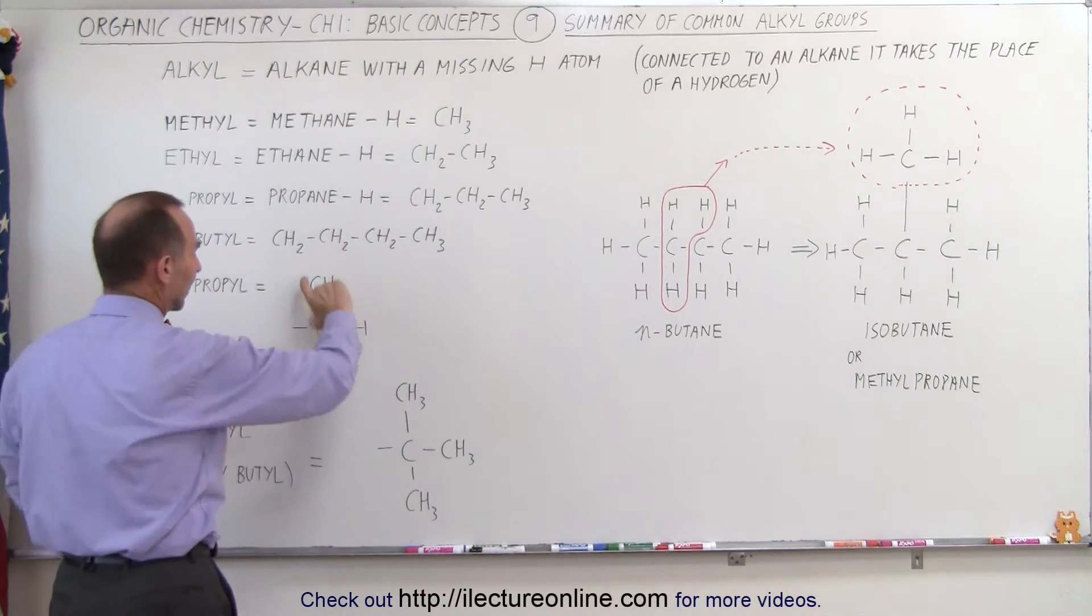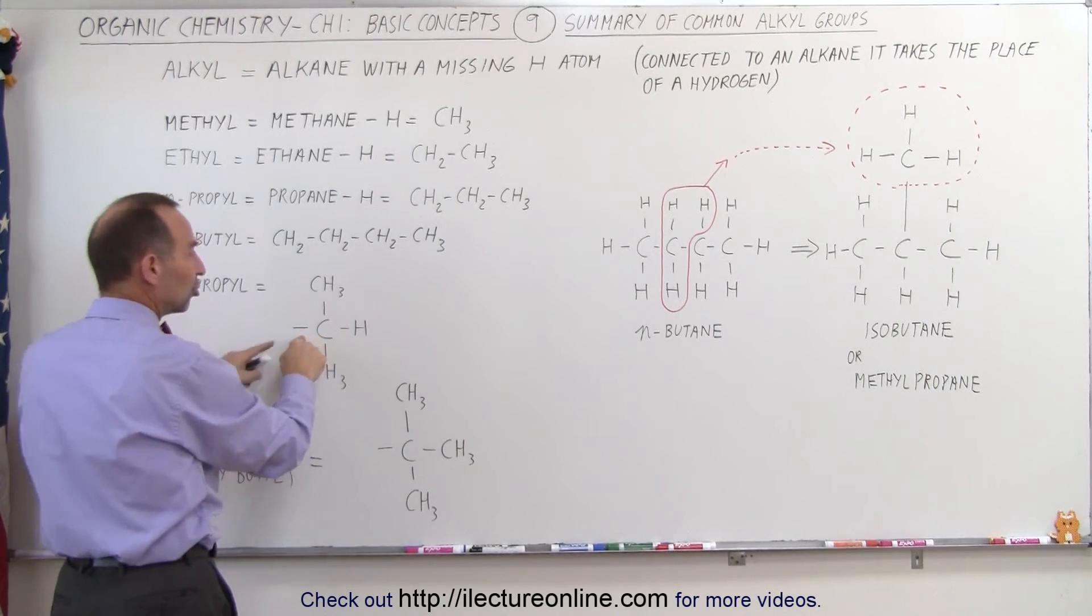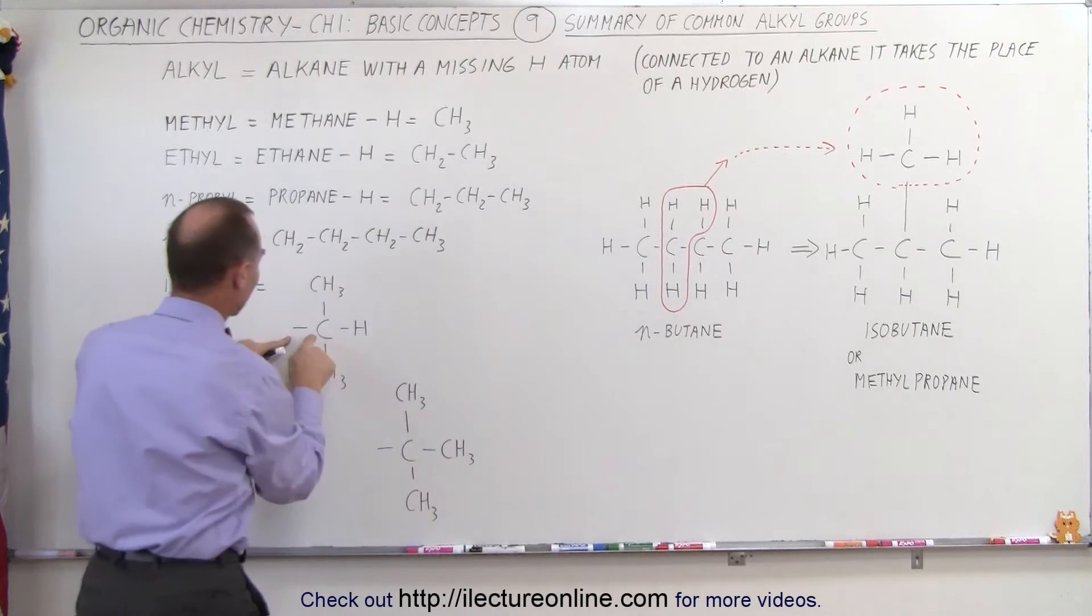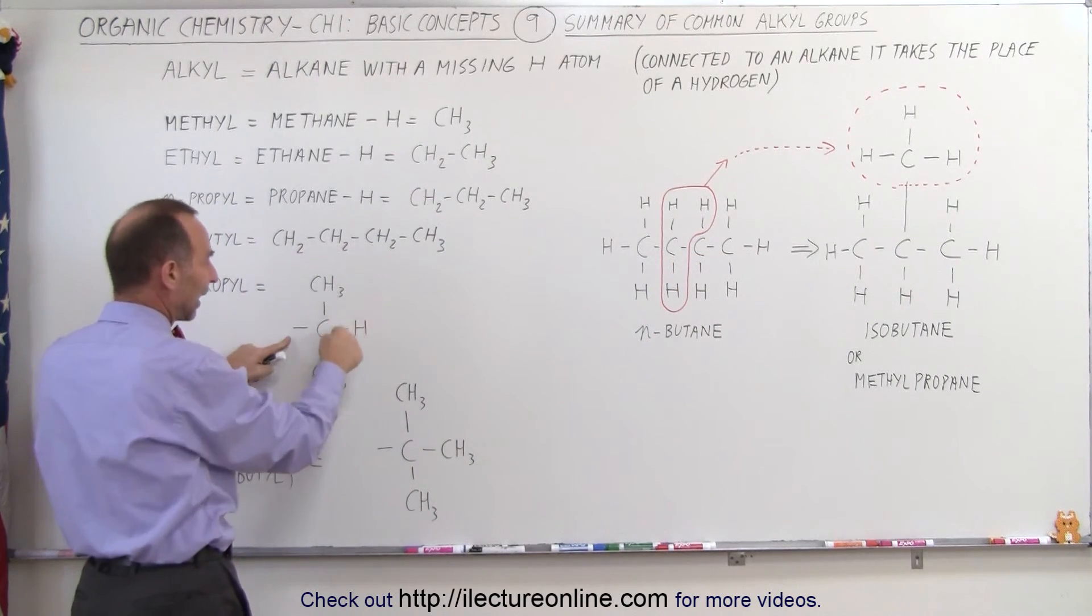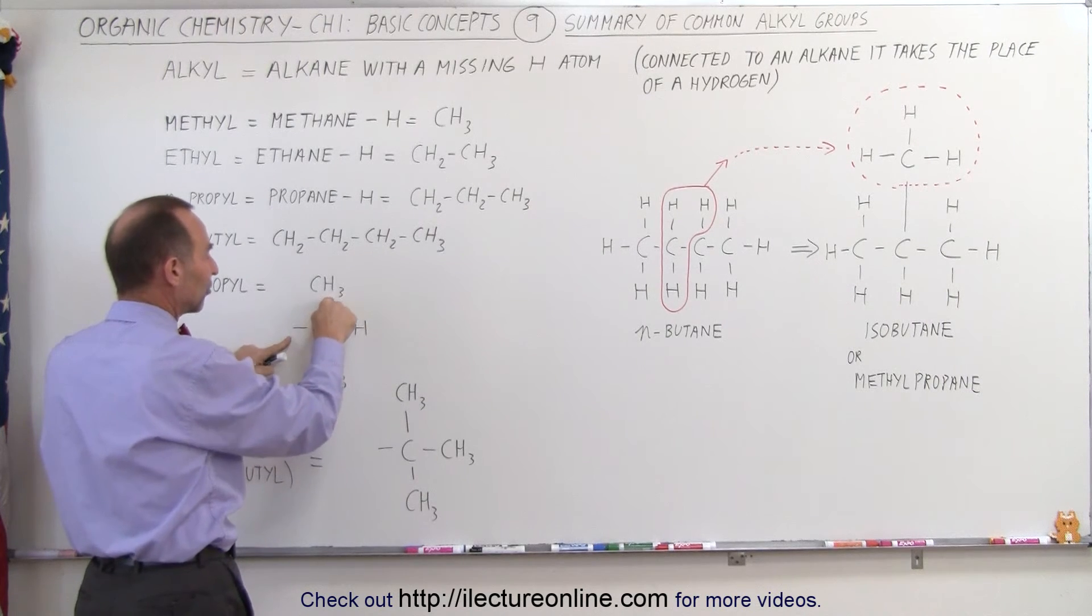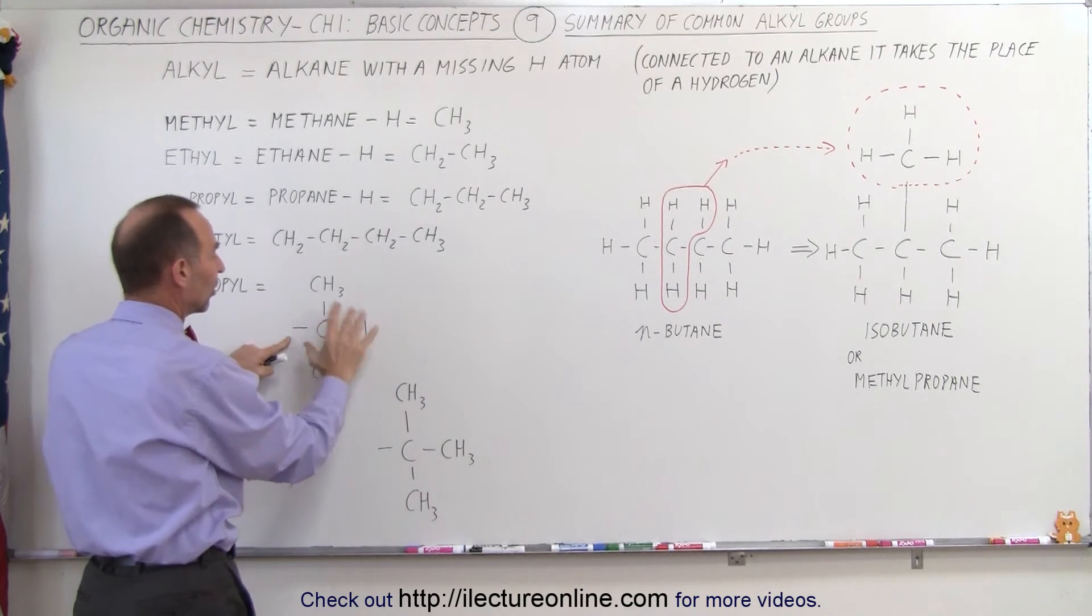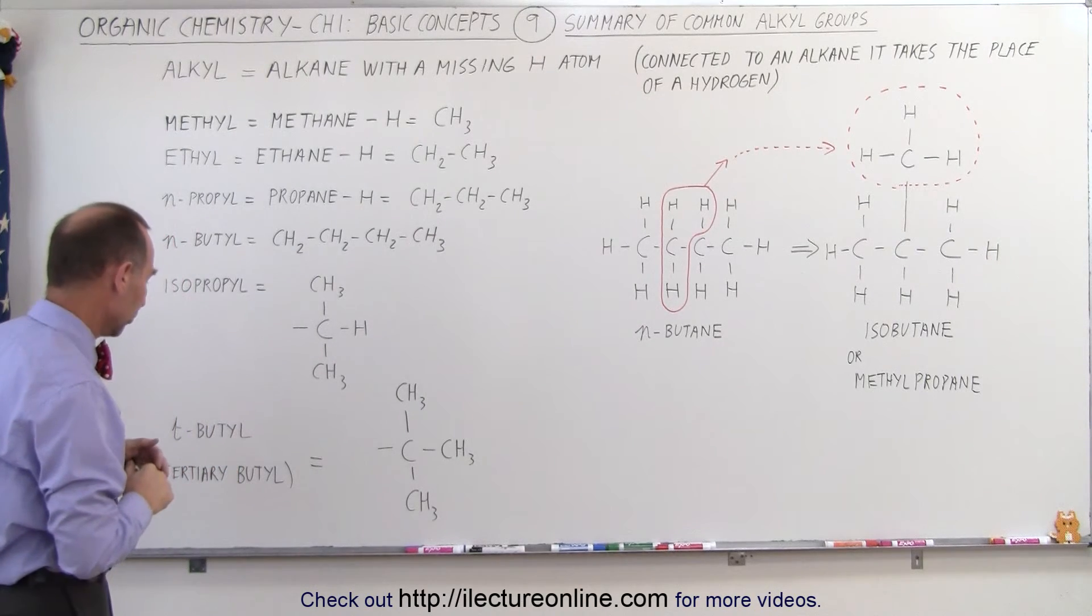Notice that we connect this group to the chain here, where we have this carbon connected to another carbon. Then we have the two carbons like this and a hydrogen at the end like that. So we have the CH3, a CH3, a C, and an H connected, which forms what we call an isopropyl group.